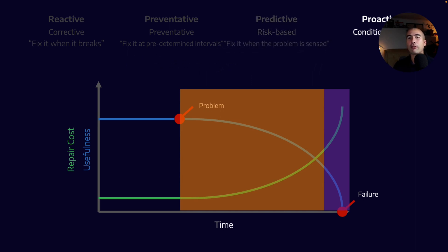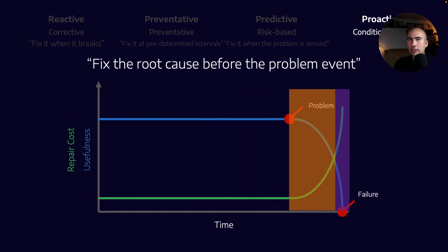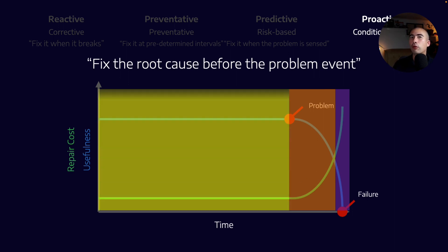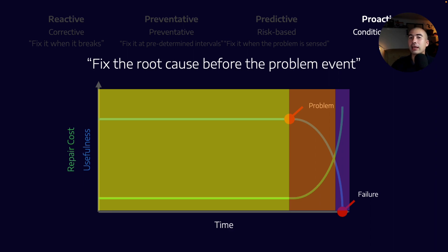Finally, we have proactive or condition-based maintenance — fix the root cause of the problem event. We're trying to intervene well before a problem ever occurs. In the case of lubrication, we know that contamination is the root cause of many machine failures. So how do we prevent contamination? Through filtration — ensuring that clean oil is going into the asset at all times. Doing that is an example of proactive maintenance.